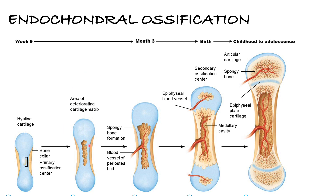In the second step, the cartilage calcifies in the center of the diaphysis, and then you start to see cavities, which would later become the spongy bone of the bone marrow. In the third stage, you start seeing the periosteal bud, which provides a way for blood vessels to come in.